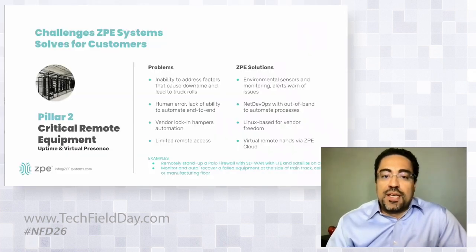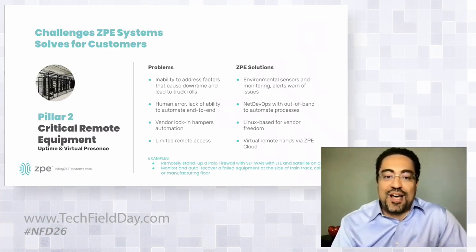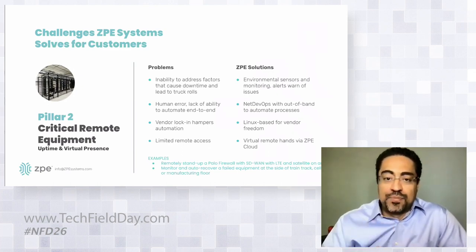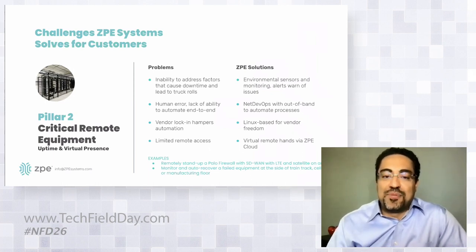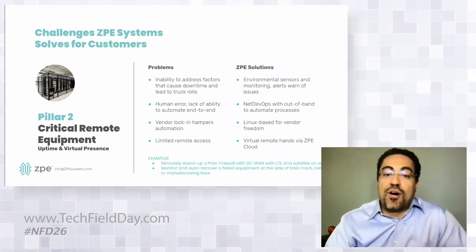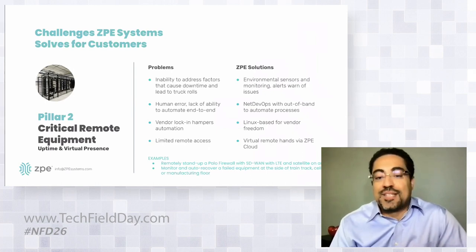The problems in this section are the factors that initially start downtime and lead to truck rolls. A lot of downtime these days is caused by human error, lack of ability to automate and eliminate that human error. There is vendor lock-in that hampers automation, and there are remote access security limitations that exist.